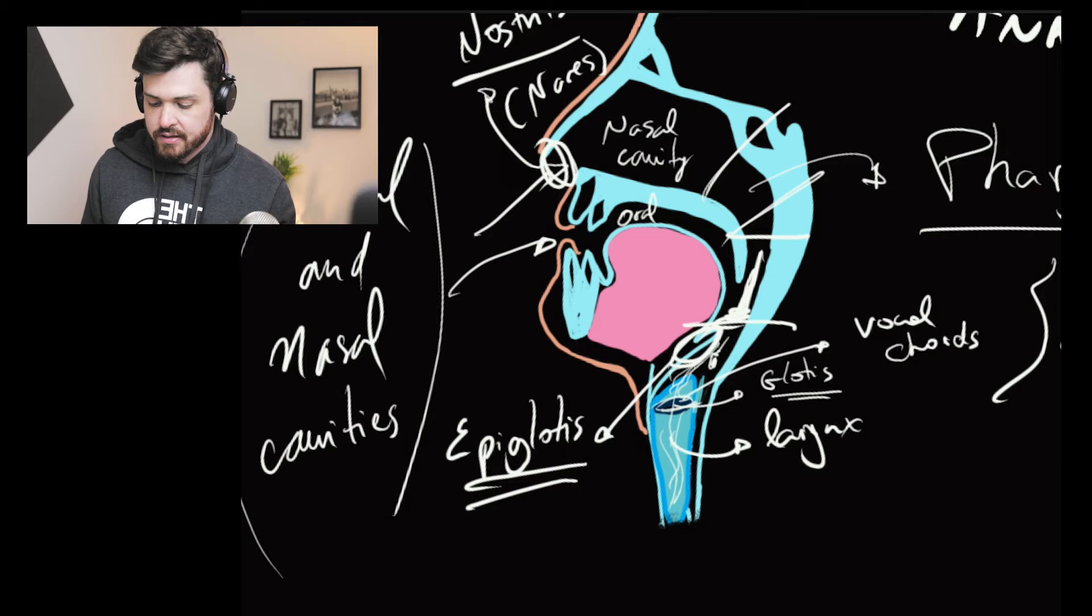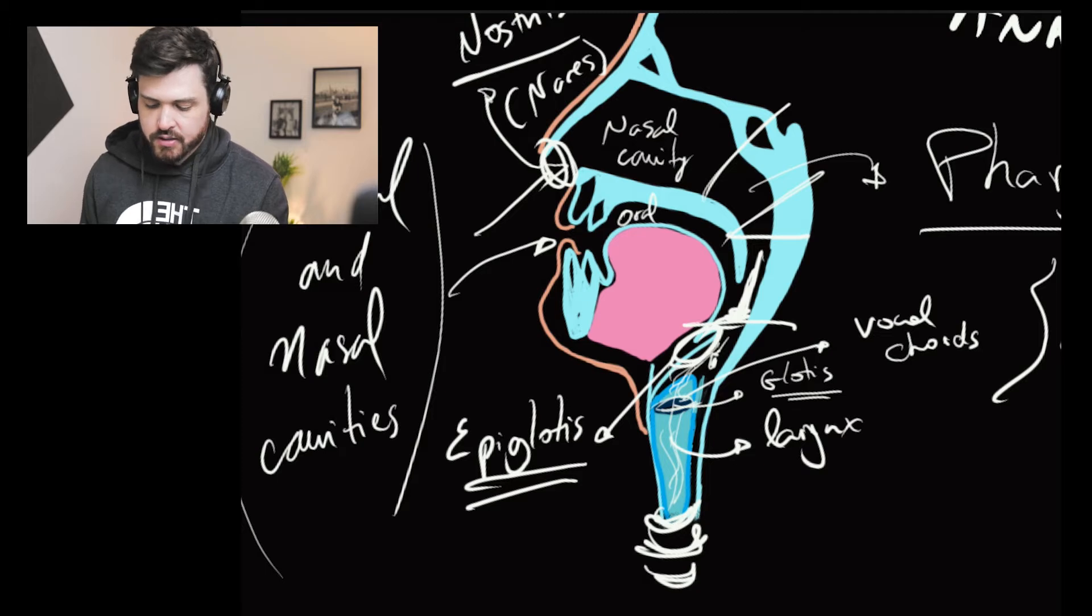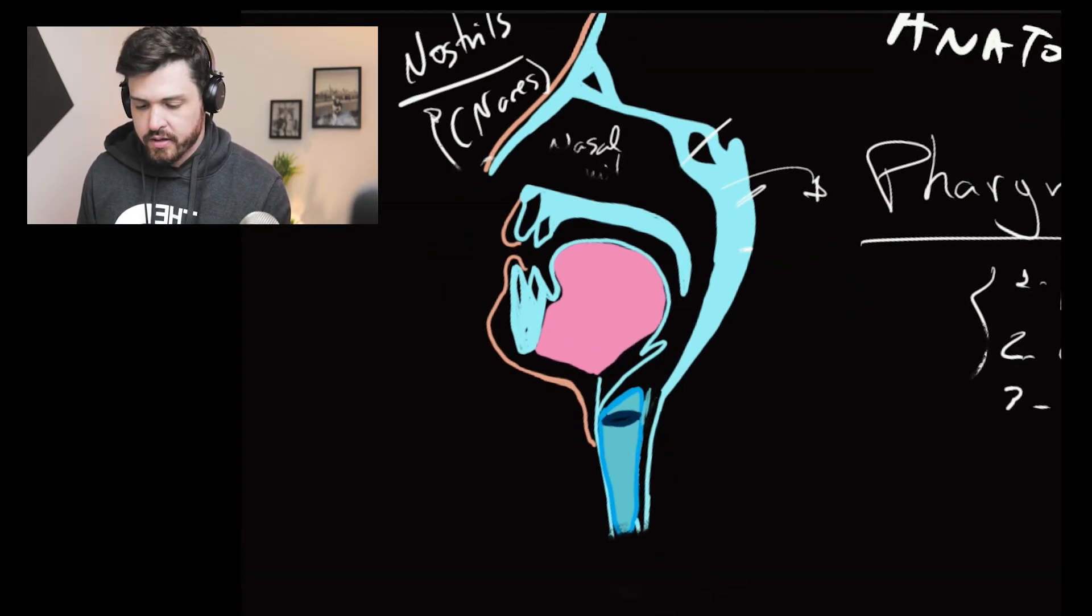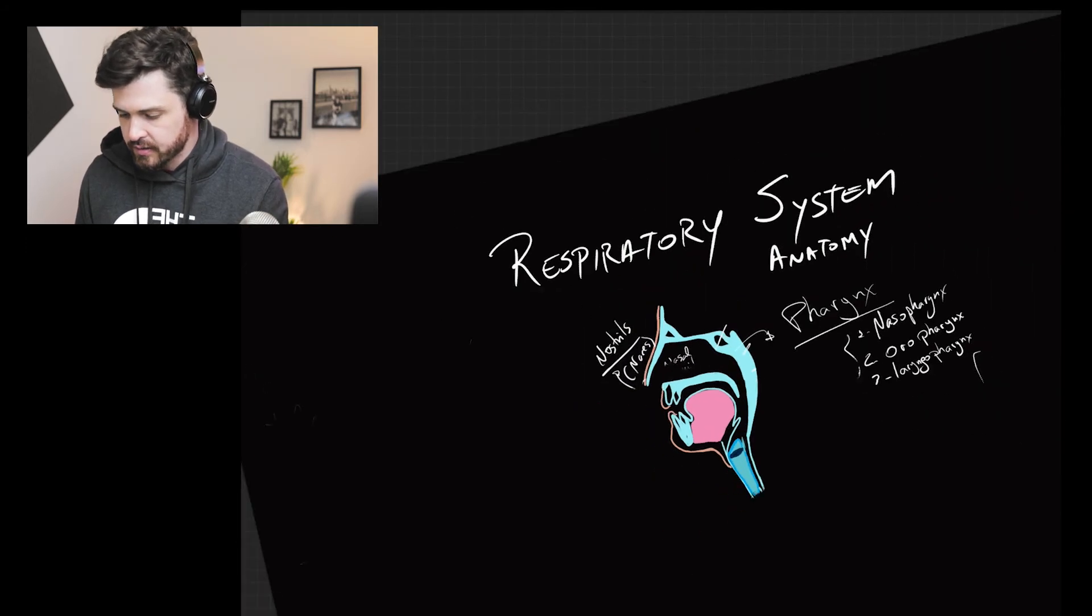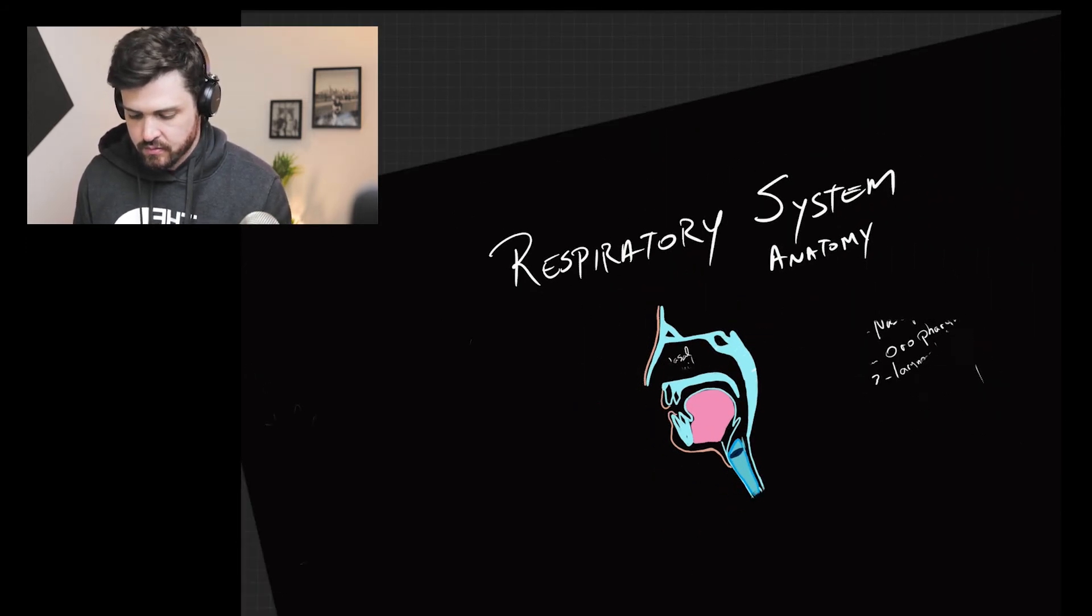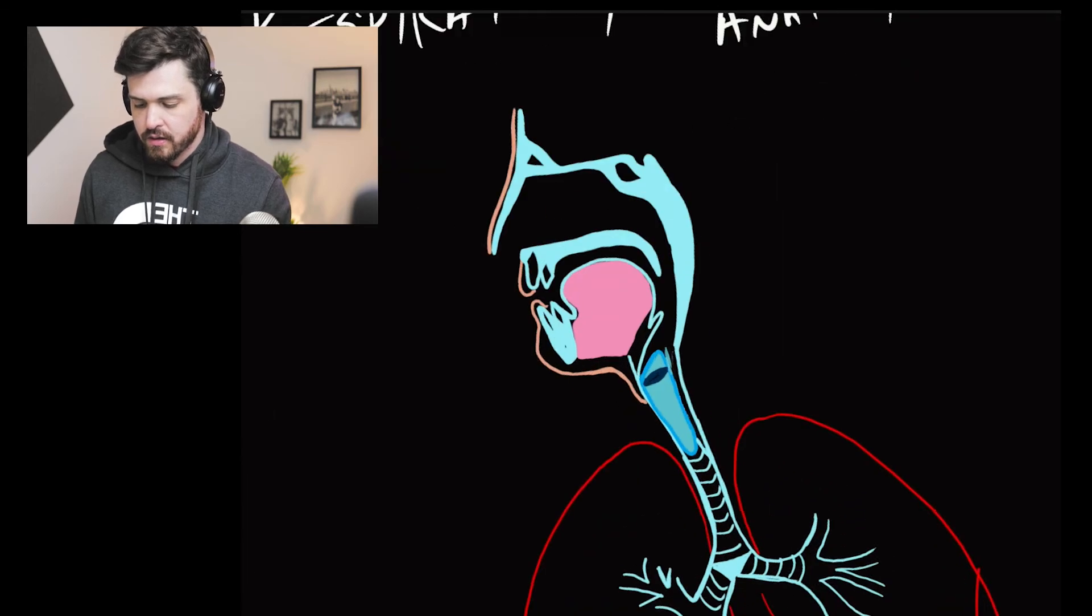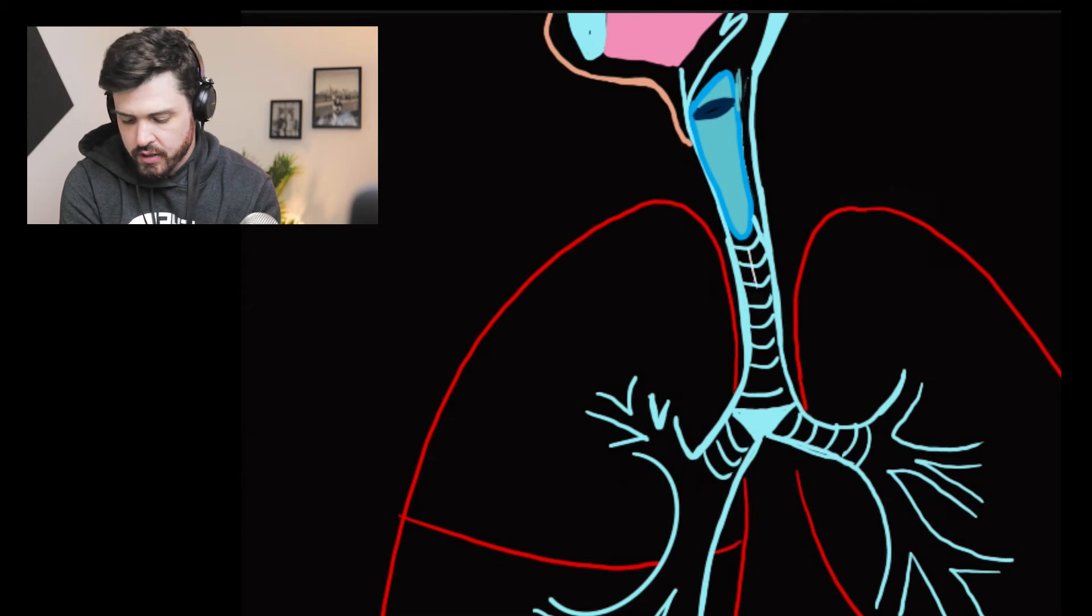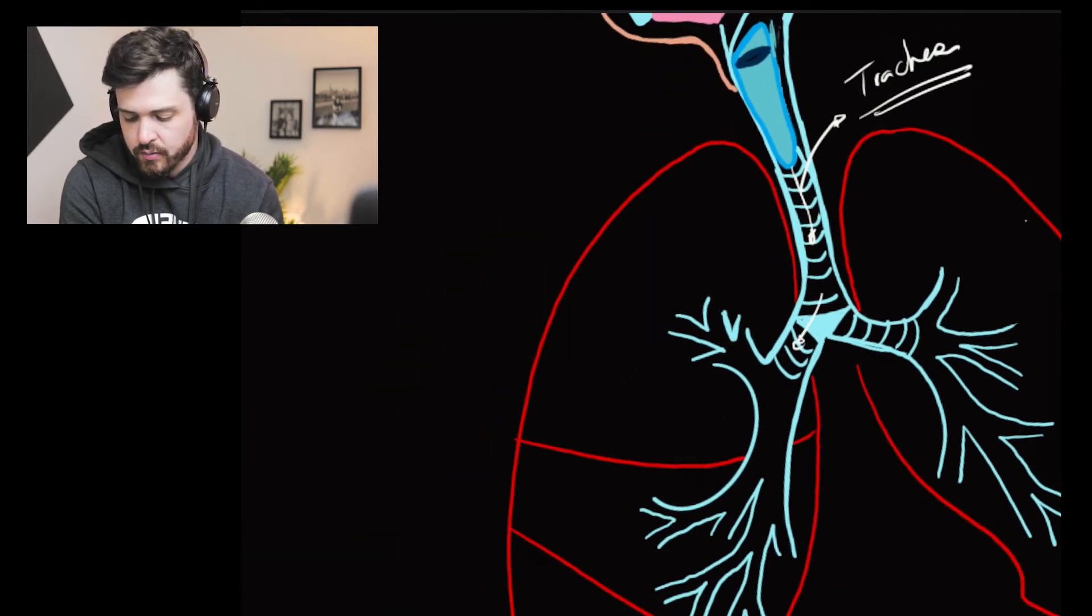So, under the glottis, we have the larynx. E depois, quando começa a ficar com os anéis aqui da traqueia, that's the trachea. Let's go to the lower respiratory tract. Here we reach the trachea. The trachea divides into the two main bronchi.